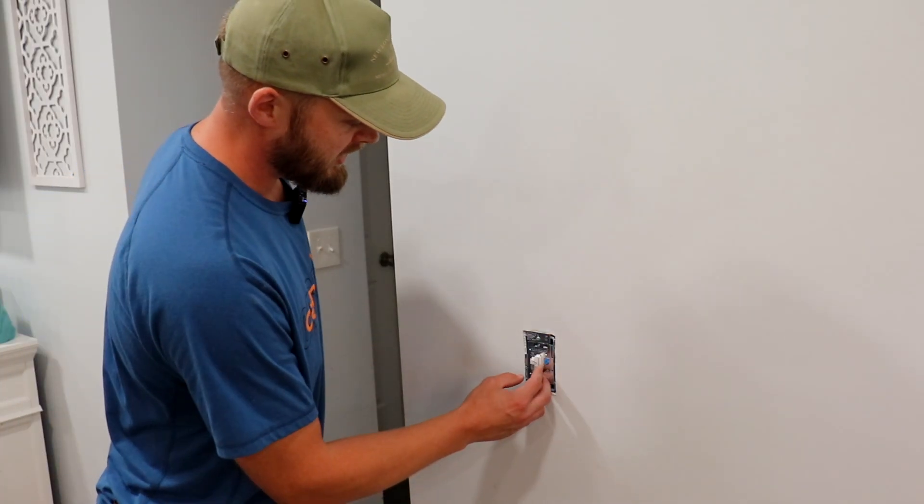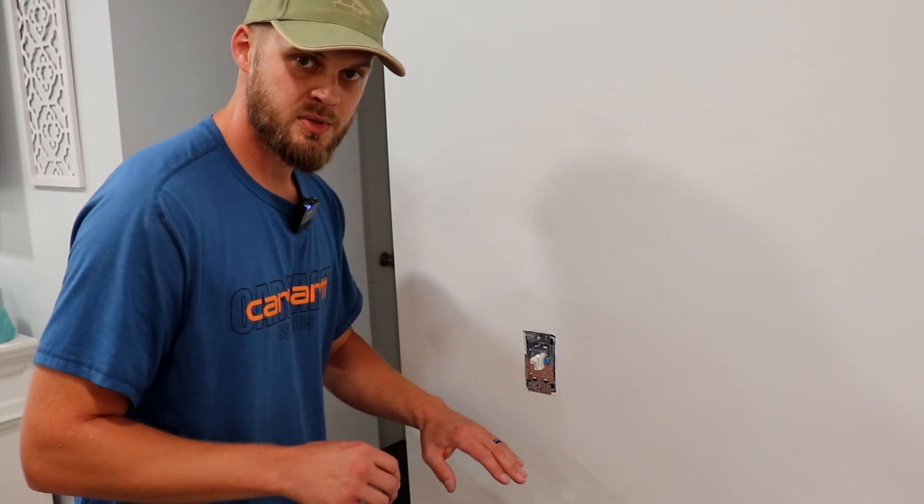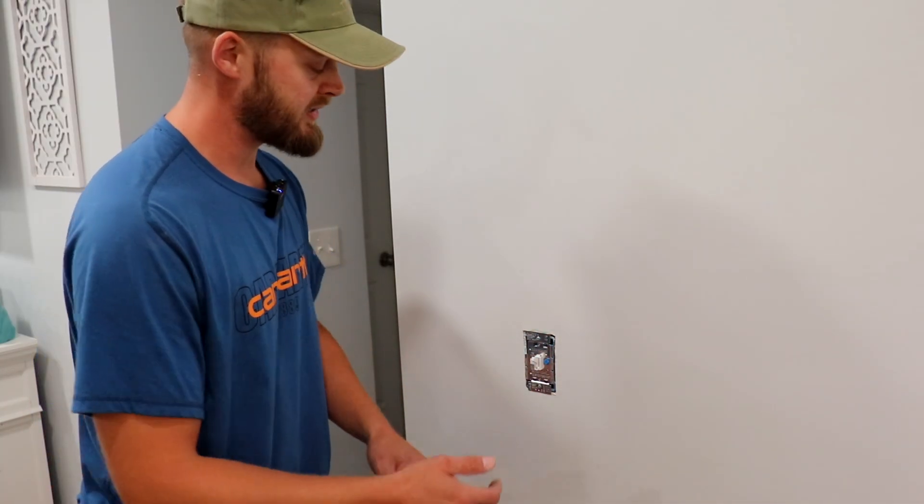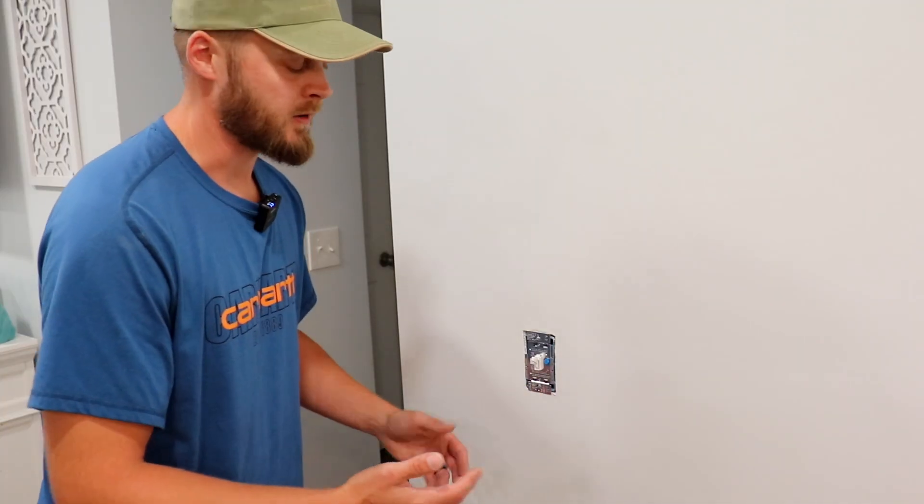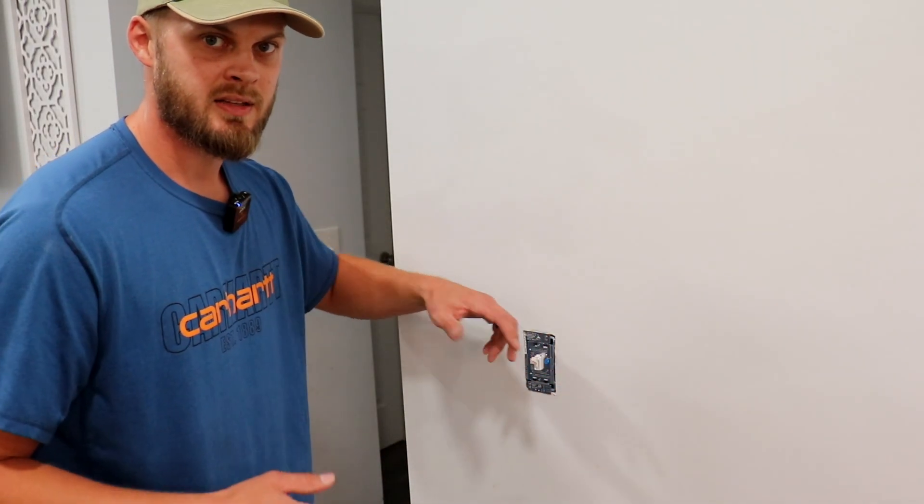Now to adjust the dimmer, it's pretty self-explanatory, but there's just a slider to the right-hand side of the switch. When it's in the lowest position, that's going to be as dim as the lights can get. Push it up and it gets brighter. So you can see that's the dimmest and that's the brightest.